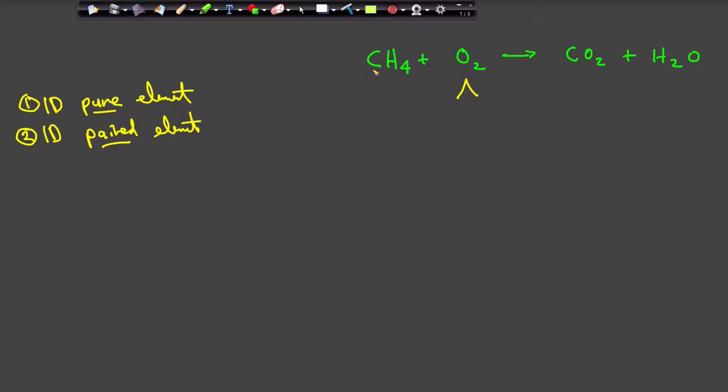And so let's just work left to right and see if we can identify which elements are indeed paired elements. First we come to carbon and we can see that it is paired. It appears once and only once on the reactant side and once and only once on the product side. Likewise we can see that hydrogen is a paired element and we can see that oxygen is not because it appears once on this side of the equation but twice on that side. It is therefore not paired.